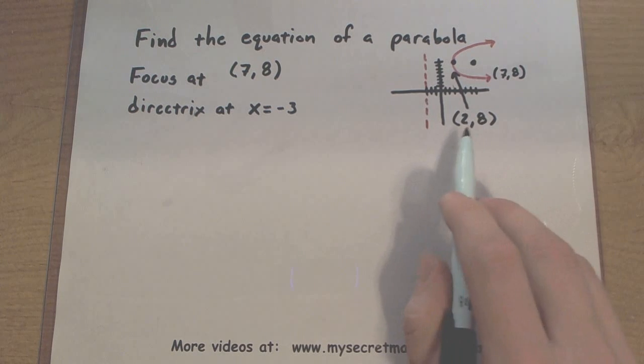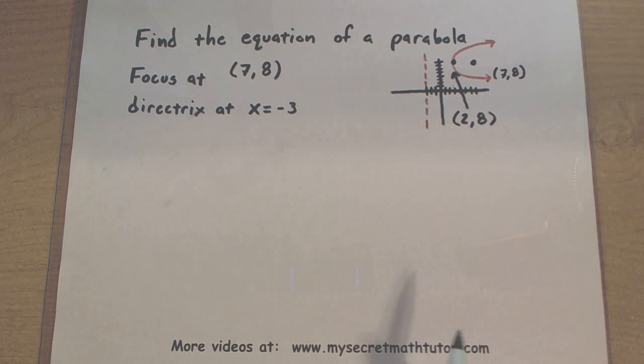Notice how 2, 8 is exactly halfway between the point 7, 8 and the negative 3.